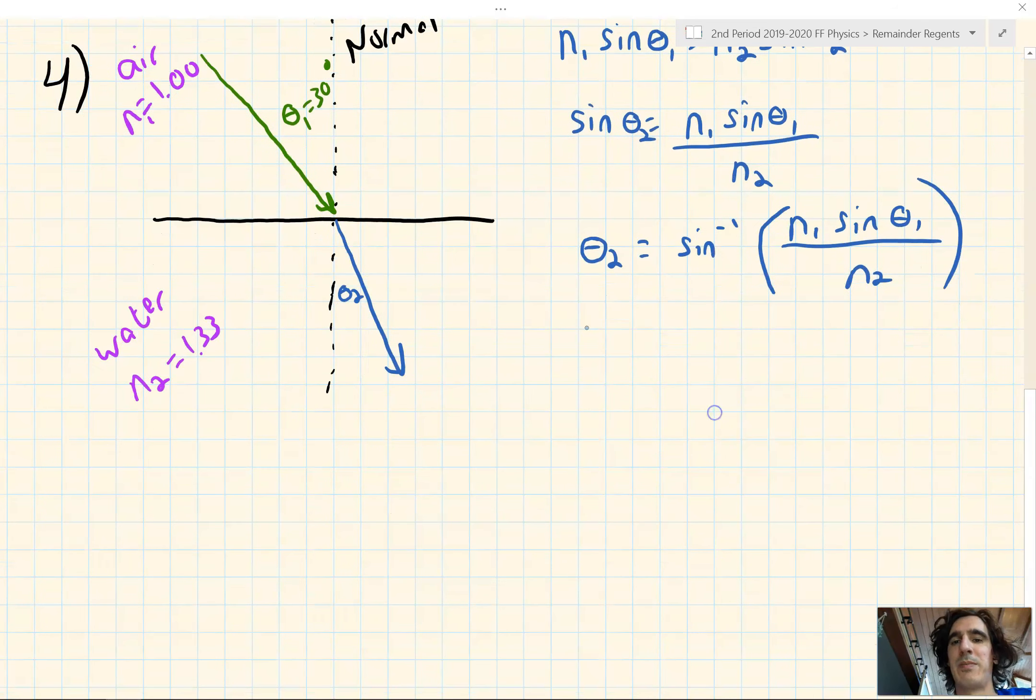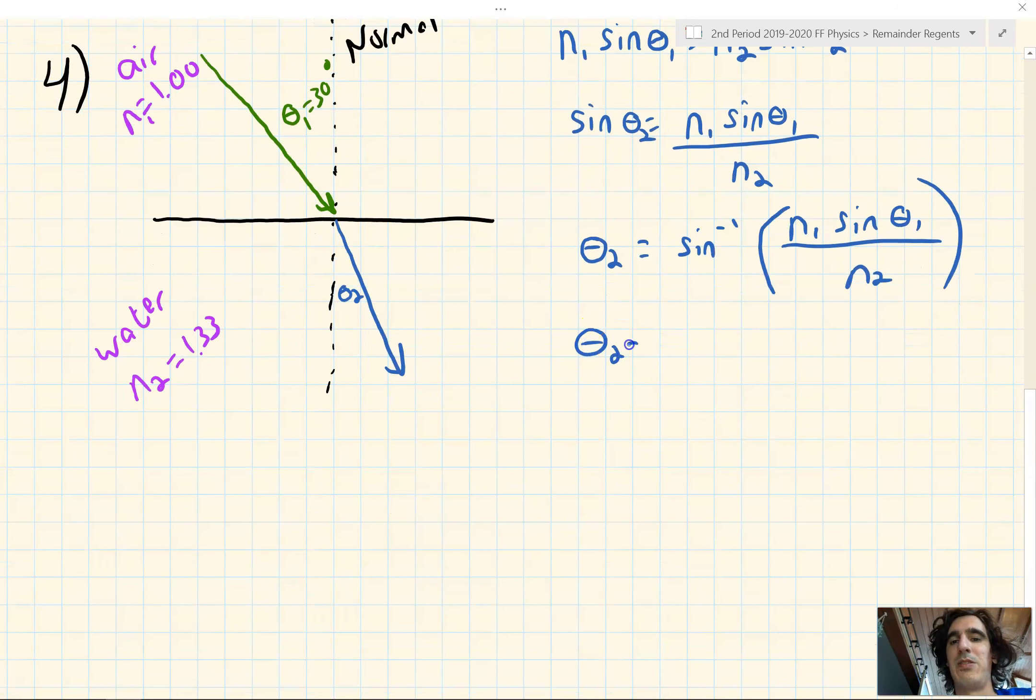And from here, we just plug and chug. So θ₂ is the inverse sine of n₁, which is 1.00, sine of 30 degrees, all over n₂, which is 1.33. Even though n₁ is just 1, we still want to plug that value in, it's a physical quantity. And remember, the index of refraction doesn't have units, but the angle, 30 degrees, does have units. So we plug and chug, make sure our calculators are in degrees, and we get θ₂ to equal 22.1 degrees.